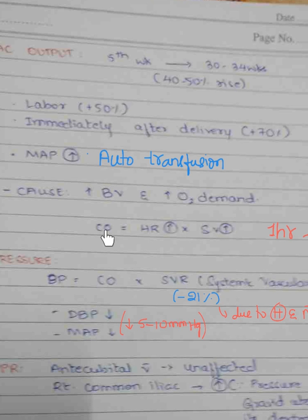Cardiac output is increased particularly due to increased heart rate as well as increased stroke volume. It takes approximately one hour after delivery to return to the pregnant state's cardiac output, and approximately four weeks or one month to reach the pre-pregnant state's cardiac output.